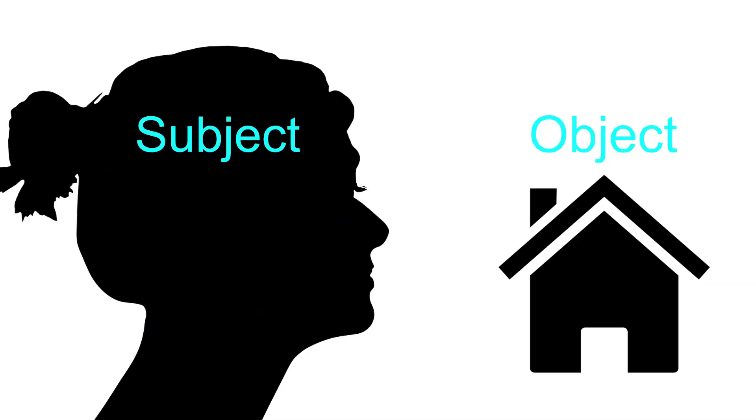By the way, if you haven't seen our video on subjectivity, be sure to check that out — there's a link in the description below. So objectivity and subjectivity are terms that relate a perceiving subject, which is normally us as thinking humans, with an object that is either perceived or unperceived.